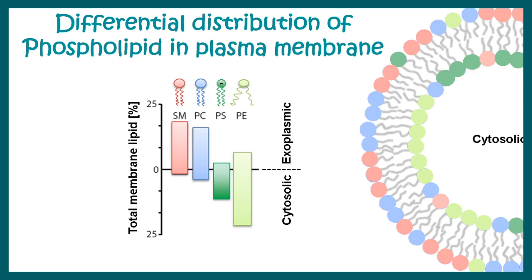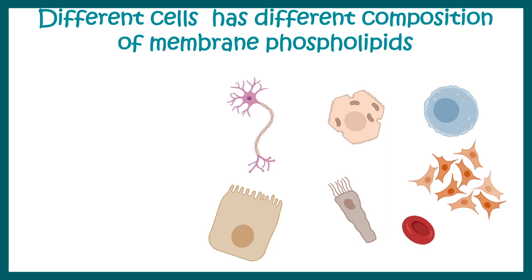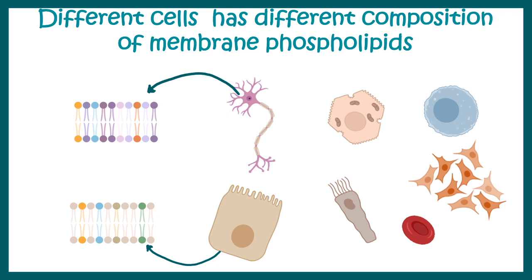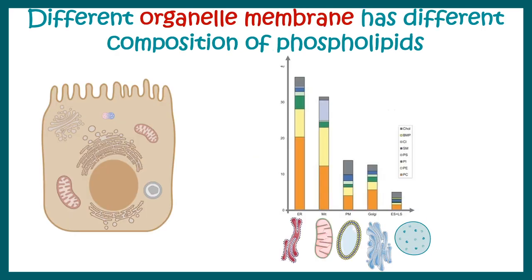Phosphatidylserine and phosphatidylethanolamine are generally found on the cytosolic side, so they have different distributions within the membrane. If we consider different cell types — for example a neuron versus an epithelial cell — they may have the same types of phospholipids such as phosphatidylcholine, serine, and ethanolamine, but the relative proportions can be very different.